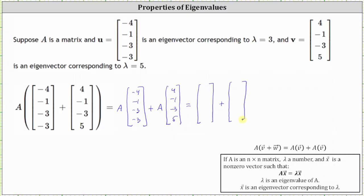Matrix A times vector U is equal to three times vector U, which is the vector negative 12, negative three, negative nine, negative nine. And matrix A times vector V is equal to five times vector V, which is the vector 20, negative five, negative 15, 25.